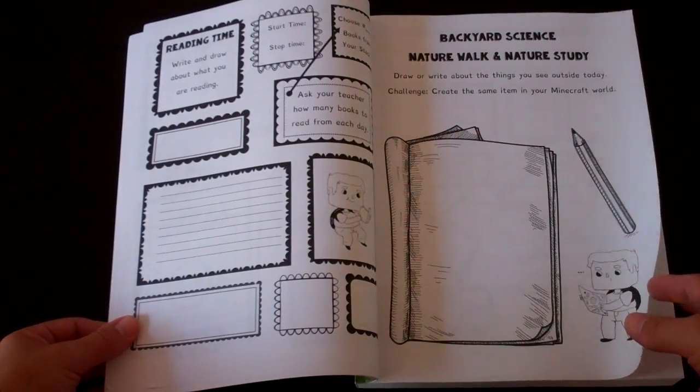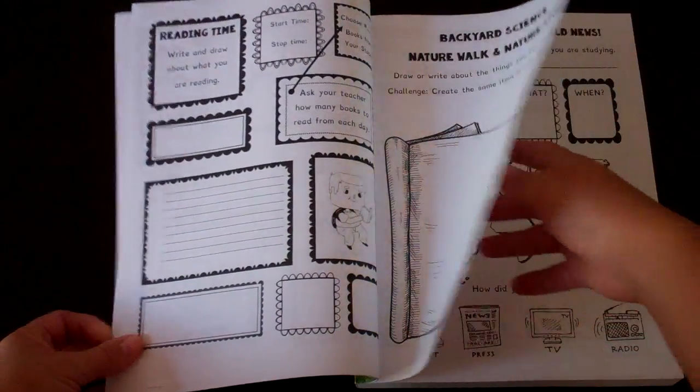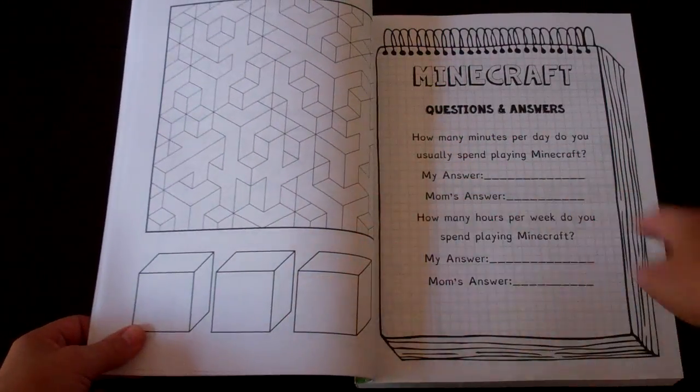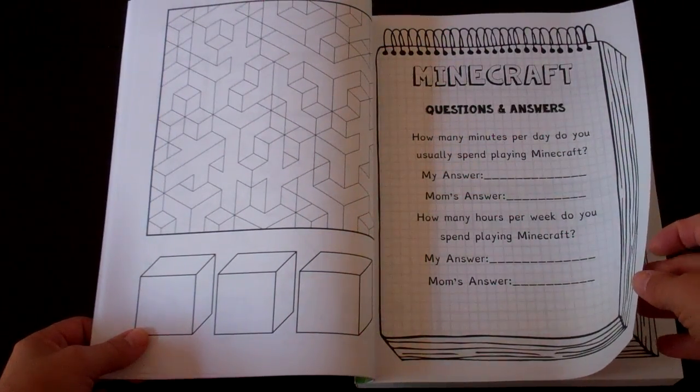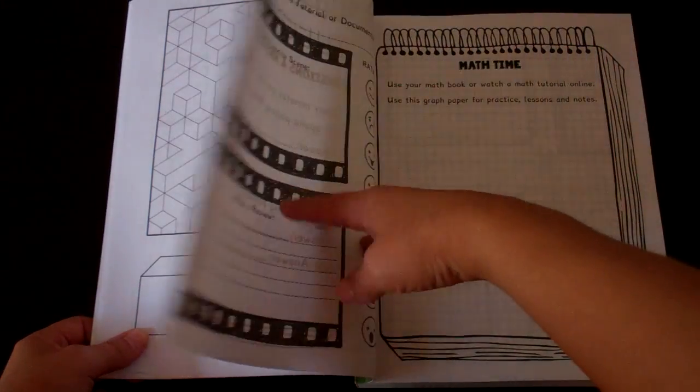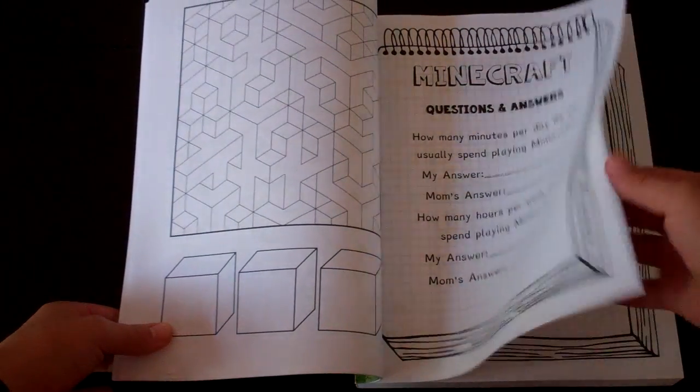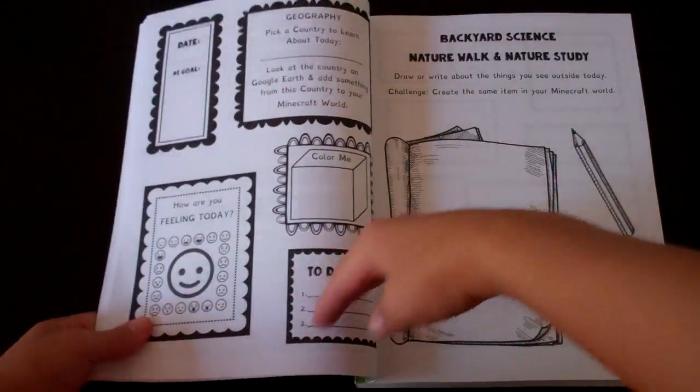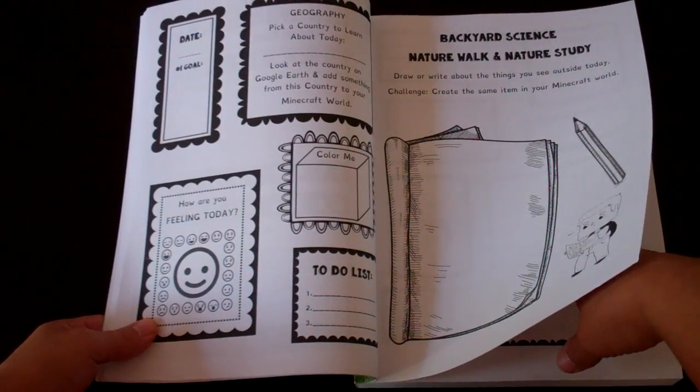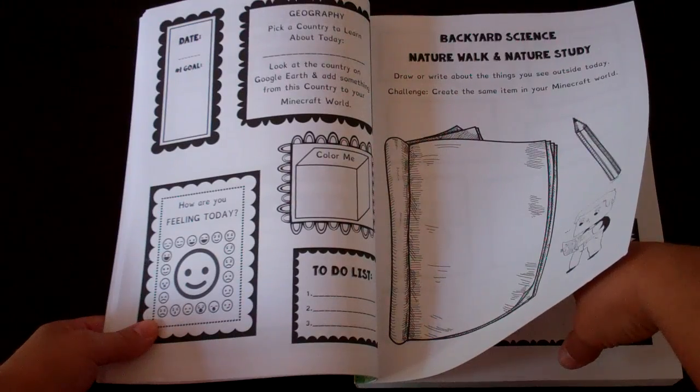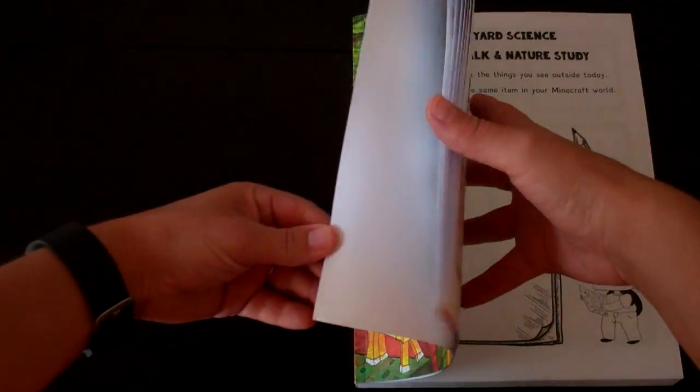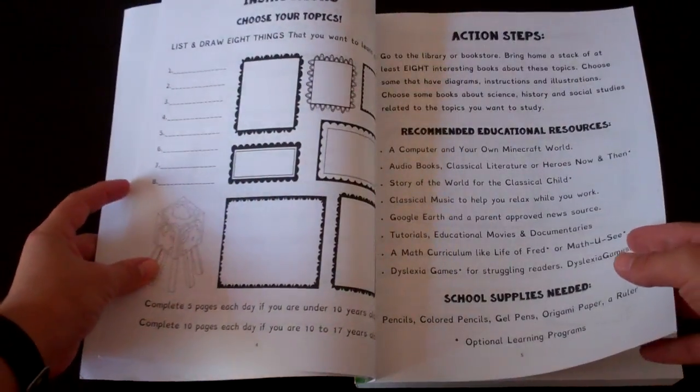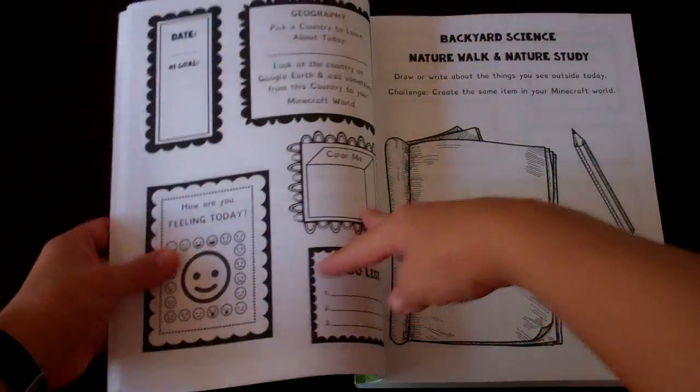You can do nature study, spelling time, social studies, some news, which is awesome. Questions and answers, kind of a little interview type thing. Movie time, math time. It's five pages a day if you're under 10 years old and 10 pages a day for 10 to 17, that's why they repeat for daily use, or they even do half a day's worth if they're younger.